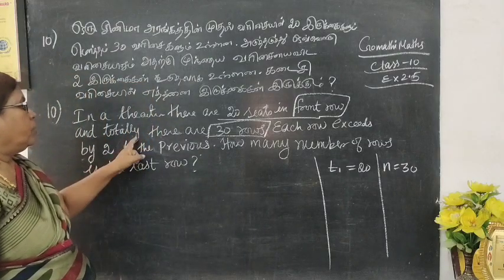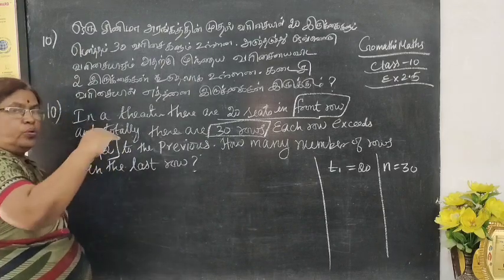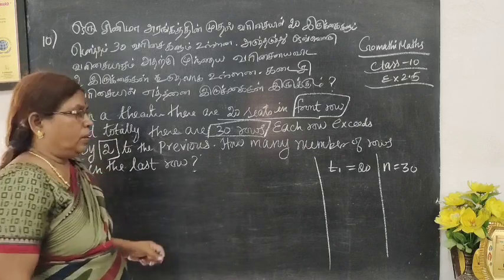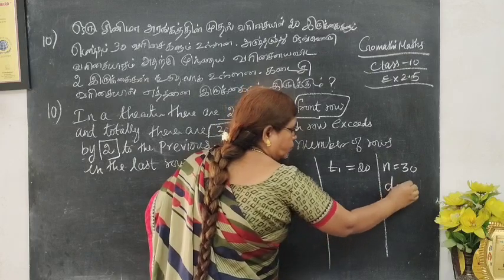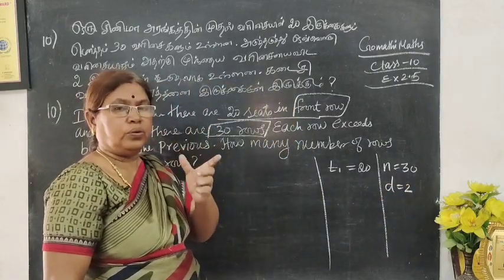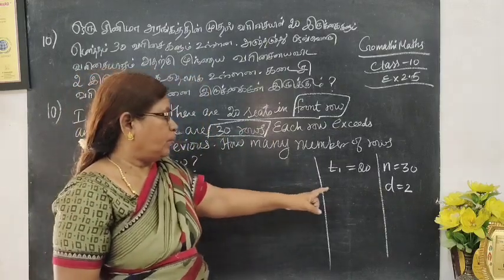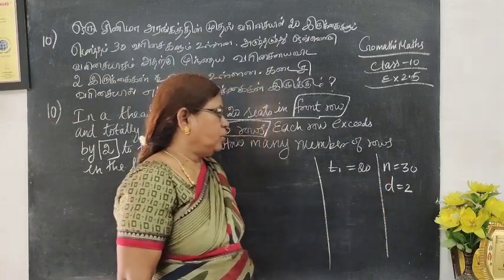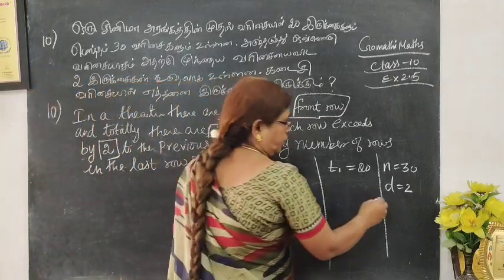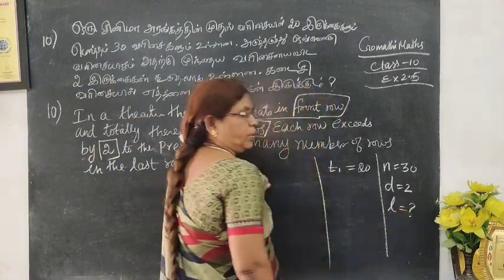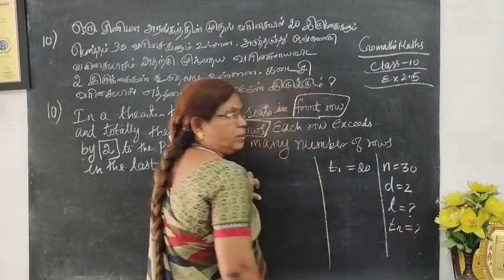Each row exceeds by 2 to the previous row. So you want to find last row in front row? L is the question mark. TN is the same as last row in front row.